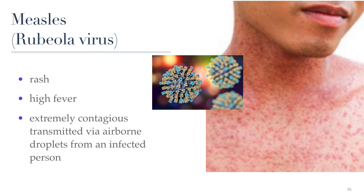Once a person is infected with measles, there is no cure — you just have to let the disease run its course. Thankfully, the measles vaccine is very effective at preventing the disease. Measles is one of the leading vaccine-preventable causes of death in the world. In 1980, before vaccination was widely available, 2.6 million people died of it in a single year. By 2014, once global vaccination programs were in place, the number of deaths dropped to 73,000. Despite these trends, rates of disease and death have unfortunately increased in the past few years because some parents have chosen not to vaccinate their children.